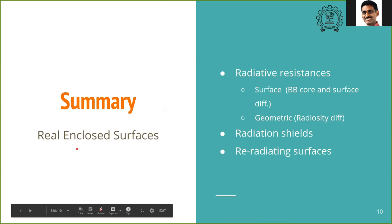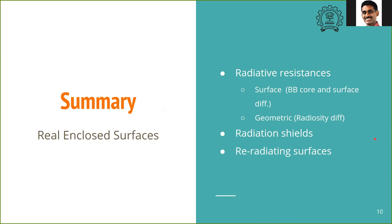To summarize, we discussed real enclosed surfaces and defined two radiative resistances. The surface radiative resistance represents the resistance from a blackbody core to the surface, driven by the potential (Eb_i minus J_i). The geometric resistance comes from radiosity differences and view factors F_ij between surfaces — the surface resistance is in series with the geometric resistances, which are in parallel. We also introduced radiation shields and re-radiating surfaces as important industrial applications, with examples to follow in tutorials.